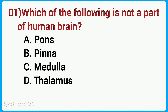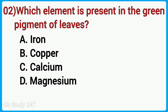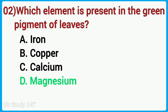First question: which of the following is not a part of the human brain? Answer is pinna. Which element is present in the green pigment of leaves? Answer is magnesium.